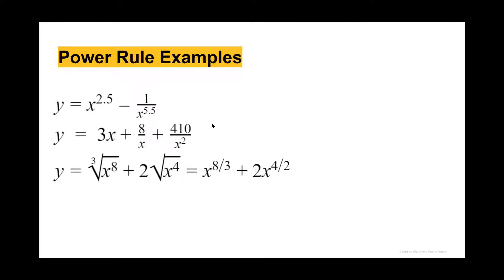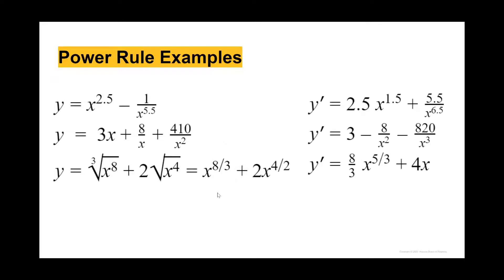For our power rule examples, we have these three. I'm going to give you some time to write them down and try to go through them, and then I'll include the answers to each of them. For the first one, we have y equals x raised to 2.5 minus 1 over x raised to 5.5. So the derivative of that equals 2.5x raised to 1.5 plus 5.5 divided by x raised to 6.